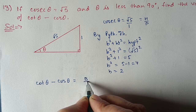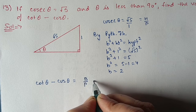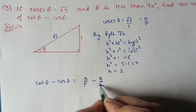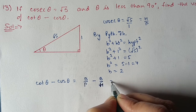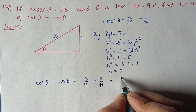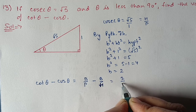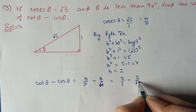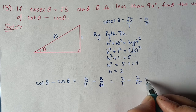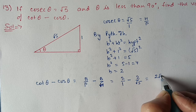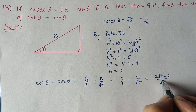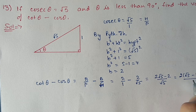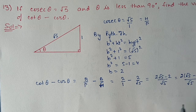Now we find cot θ minus cos θ. cot θ is base upon perpendicular: 2 upon 1. cos θ is base upon hypotenuse: 2 upon root 5. So cot θ minus cos θ equals 2 minus 2 upon root 5. Taking LCM, we get 2 root 5 minus 2 upon root 5. Taking 2 as common, the answer is 2(root 5 minus 1) upon root 5.